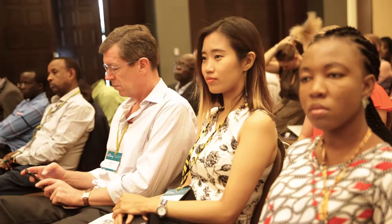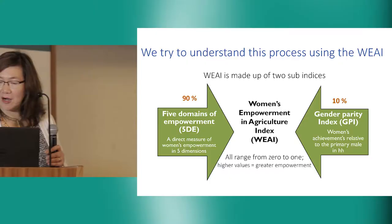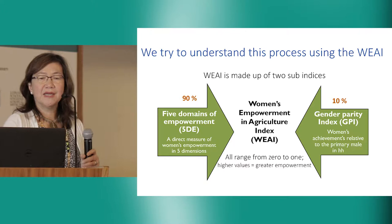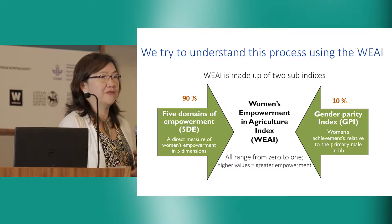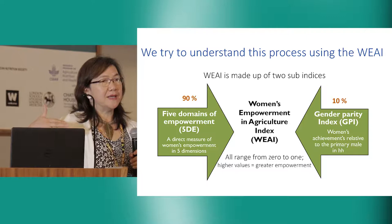In an attempt to answer that, we developed the Women's Empowerment in Agriculture Index to understand this process. It's a process — the index is made up of two sub-indices. One looks at five domains of empowerment, and the other compares the woman's empowerment with the primary male in her household.